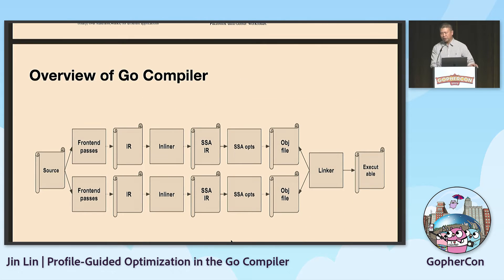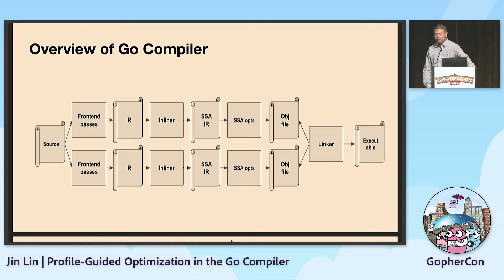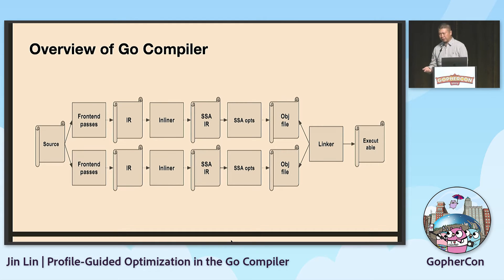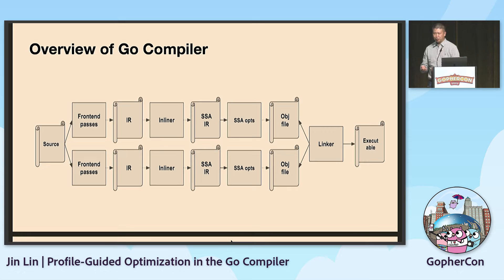Here is an overview of the Go compiler. The source code in each package is parsed by the front-end into the AST IR. Then the compiler applies escape analysis. The AST IR is translated into the SSA IR, followed by SSA-based optimization to generate object code. The linker takes all the object code and generates an executable file.